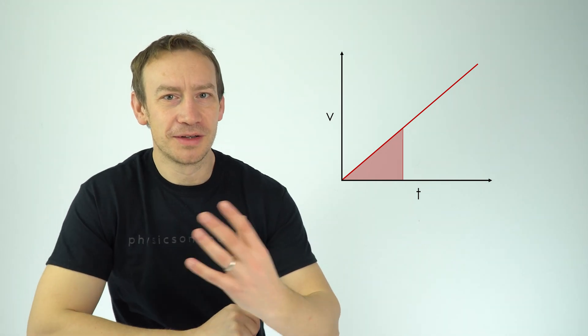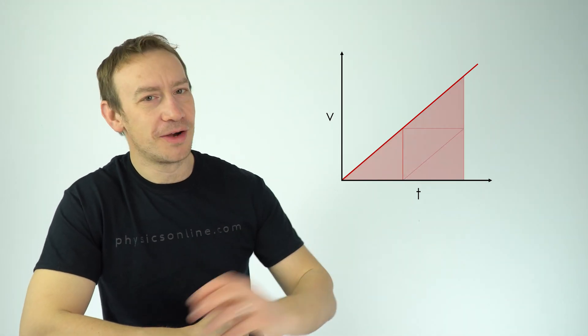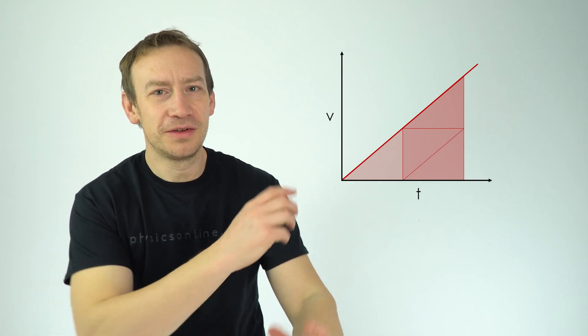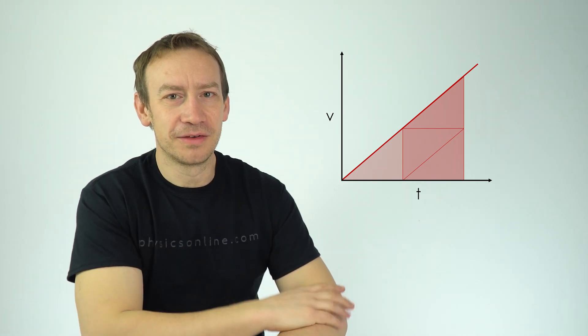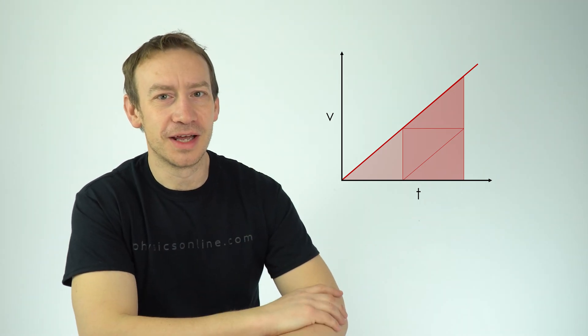Now if we want to know how far it travelled in the second second, we can look at this area underneath the graph, and we can see that that's just equal to three times the area that we had in that first second, because there's effectively three triangles in there.